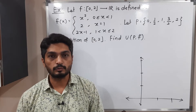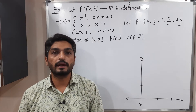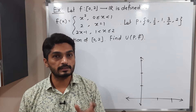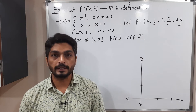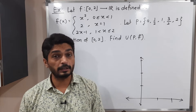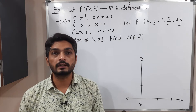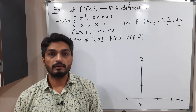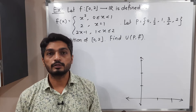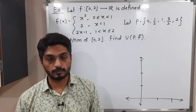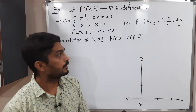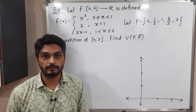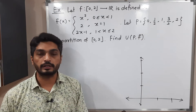Let us discuss this example. We have a function which is defined on the closed interval [0,2] and we have to find its upper sum U(P,f), where the partition of the closed interval [0,2] is given. Our first task is to draw a graph of that function. The function has three different definitions for three different domains.